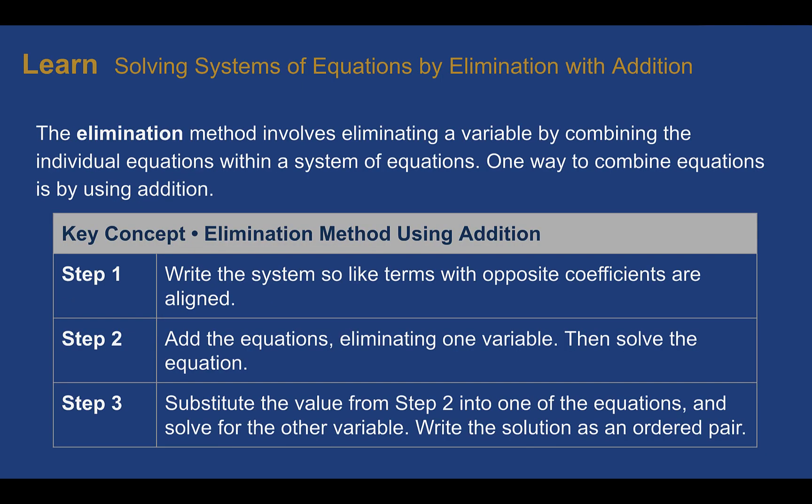Solving systems of equations by elimination with addition. In previous lessons, we learned about two other ways to solve systems of equations: graphing, where we just find the point of intersection, and substitution, where we can plug one equation into the other and solve for the remaining variable. The third method is elimination — a method that involves eliminating a variable by combining the individual equations within a system, and one way we can combine them is by adding.